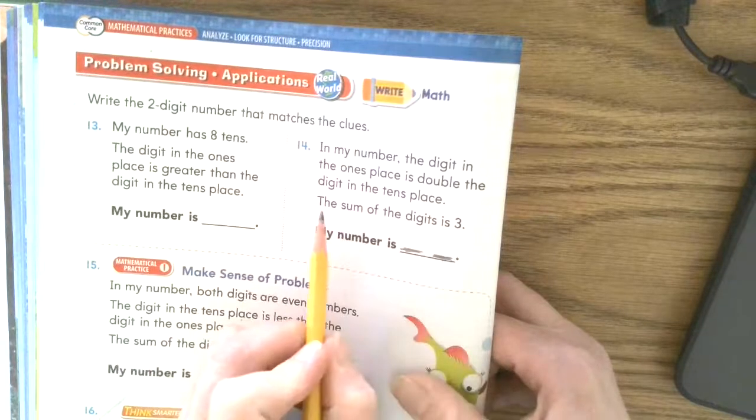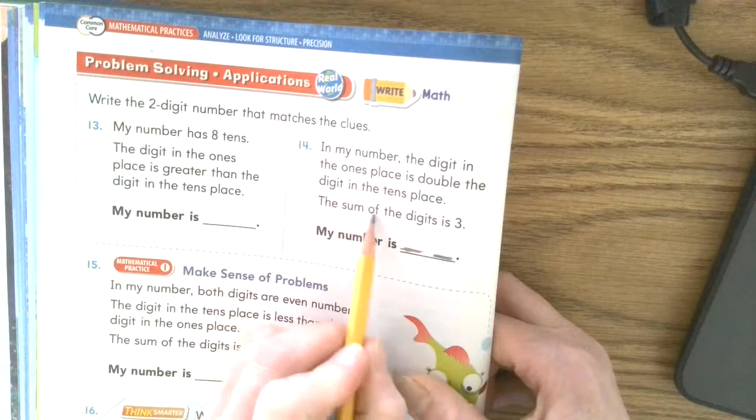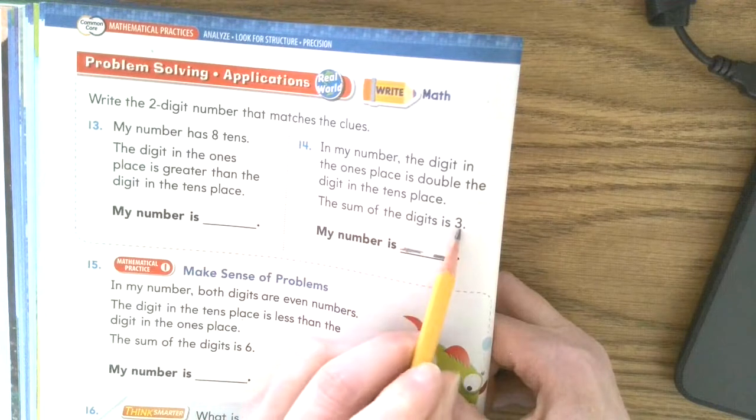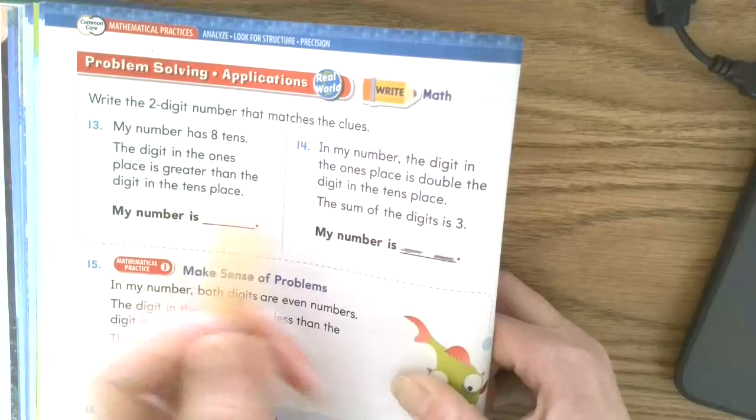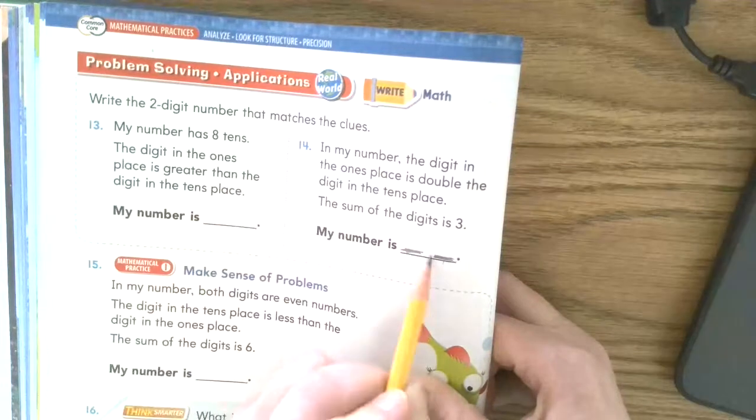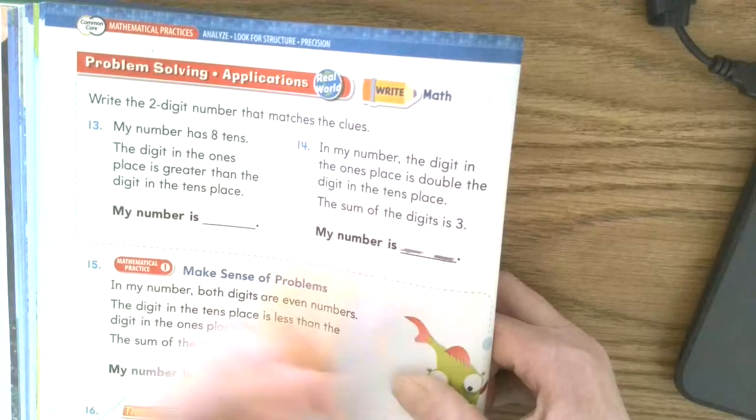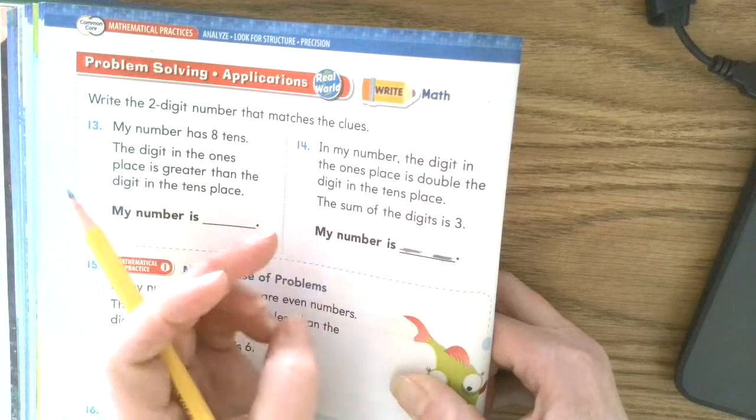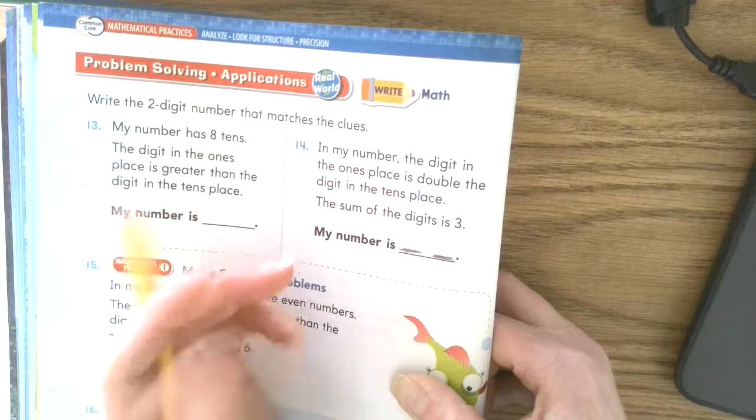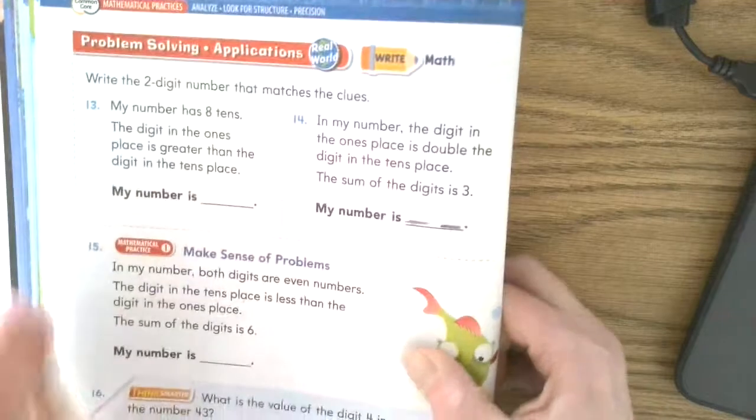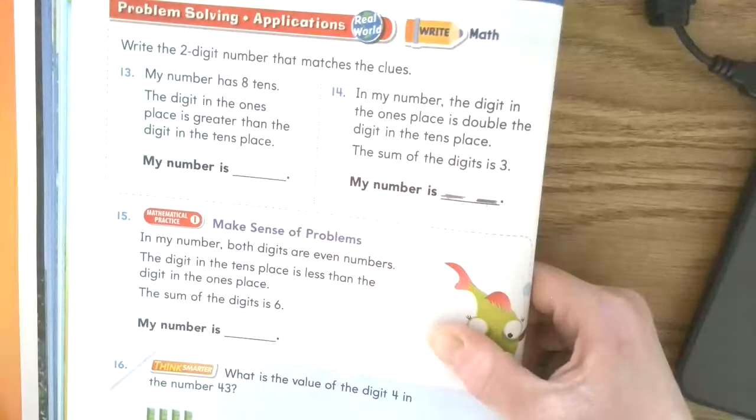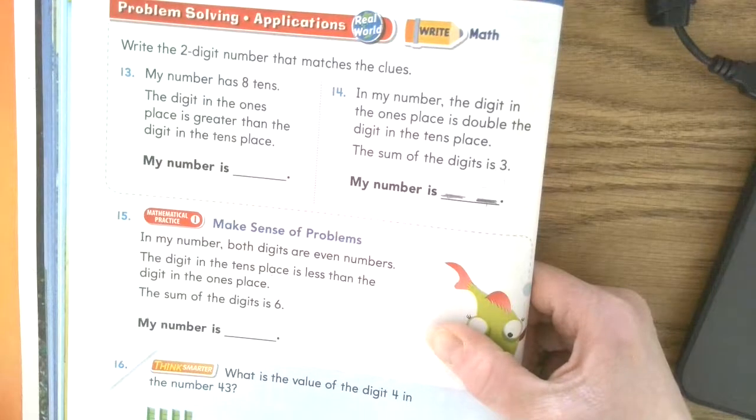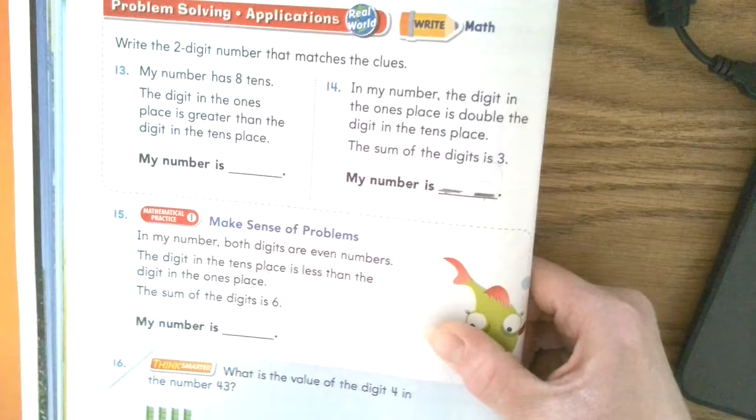Then it says the sum of the digits is three. That means when you add this digit plus this digit, you're going to get three. Don't let that confuse you. I don't know why the math people put this in the same lesson that they're talking about value. I think they're trying to trick you.